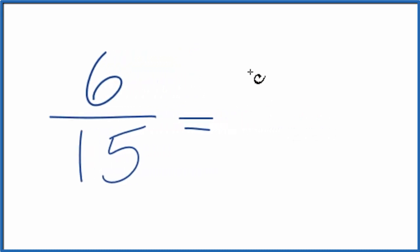So 6 divided by 3 is 2, and 15 divided by 3 is 5. So we've simplified 6/15 down to 2/5, and you can't reduce this any further and still have whole numbers.